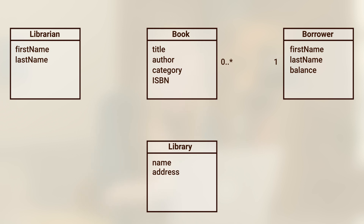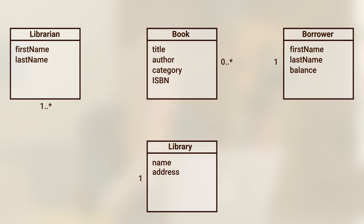For example, connecting librarian to library: how many librarians does a library have? I could have one — in fact, I definitely need one, I can't have a library without a librarian — or I could have five or ten. So I'll write '1..*' next to my librarian class to indicate at minimum one, or possibly many. Next to the library class, for that same association, there's only going to be one library per librarian, because we don't want our librarian working at 20 different libraries. I'll fill out the rest of these numbers myself and let you decipher them on your own time.